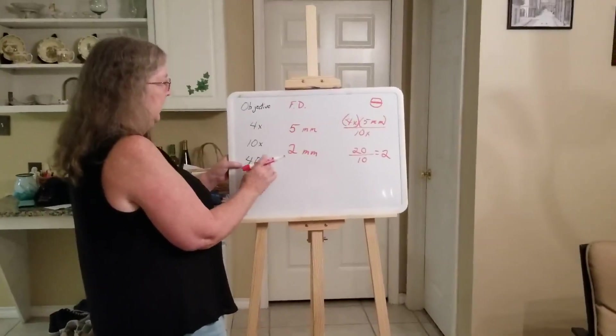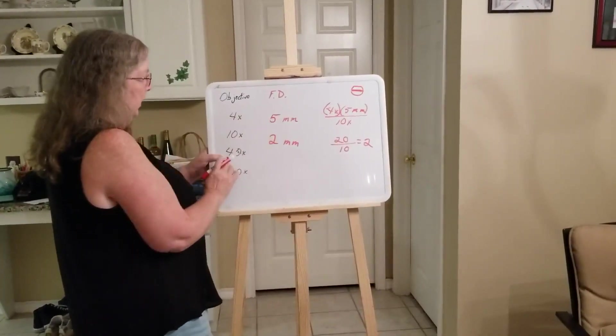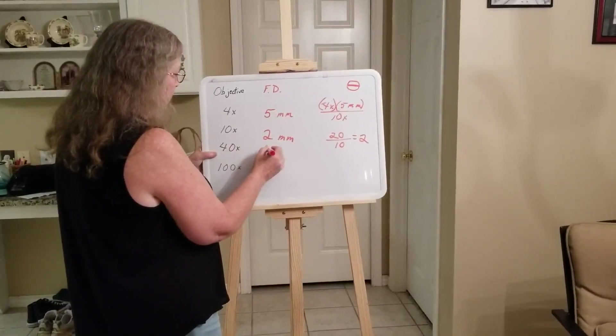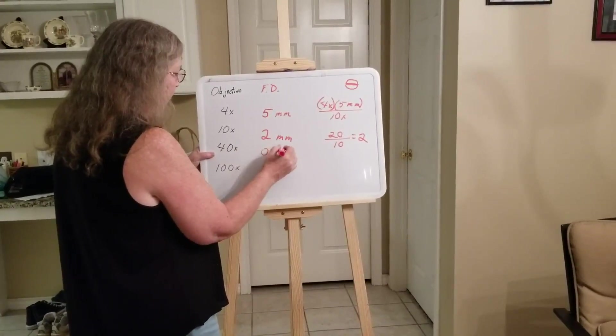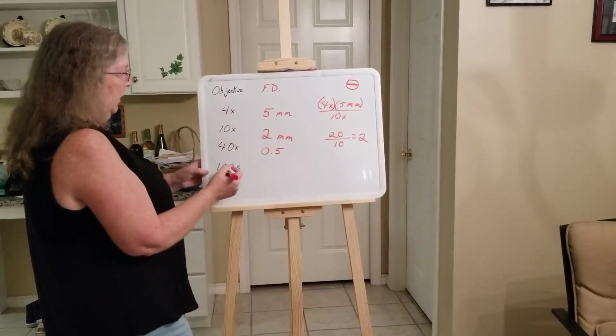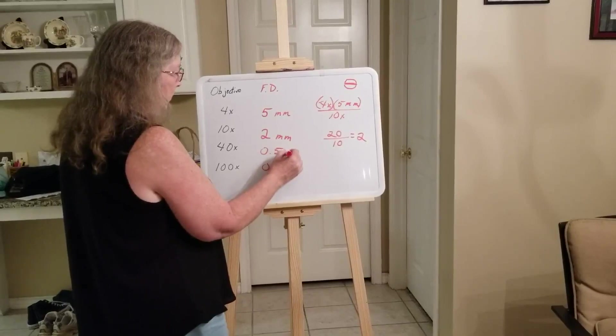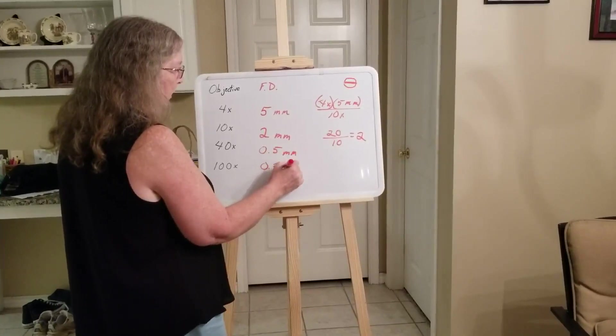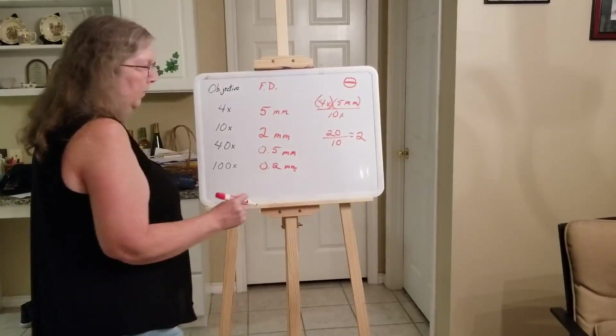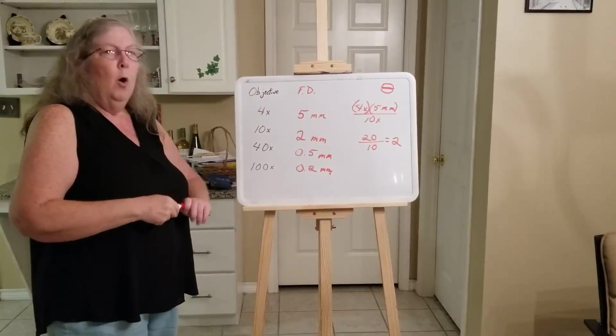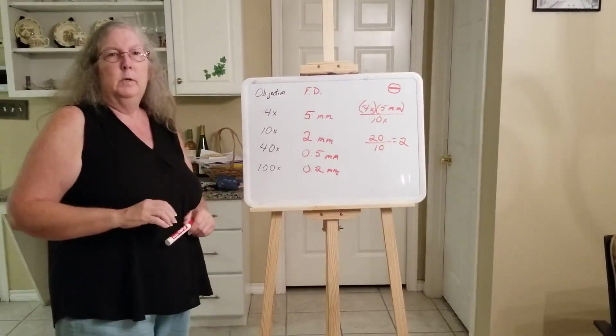So you can go ahead and do the calculations for the rest of these. Once again, this would be 20, divide it by 40. And that is going to give you 0.5. And then 20 divided by 100 is going to give you 0.2. M is just the measurement millimeters. So that is how you would figure out the field diameter. Why do you want to know what the field diameter is? That is so you can calculate the cell size.